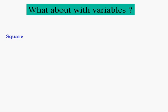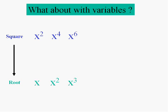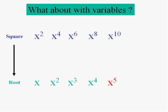Don't forget about variables also. The square root of x squared is x. The square root of x to the fourth is x squared. Any even exponent with variables is going to be a perfect square, because you add exponents when you multiply. The square root of x to the tenth is x to the fifth, because x to the fifth times x to the fifth equals x to the tenth. So any even exponent is going to be a perfect square — you'll need to know that.